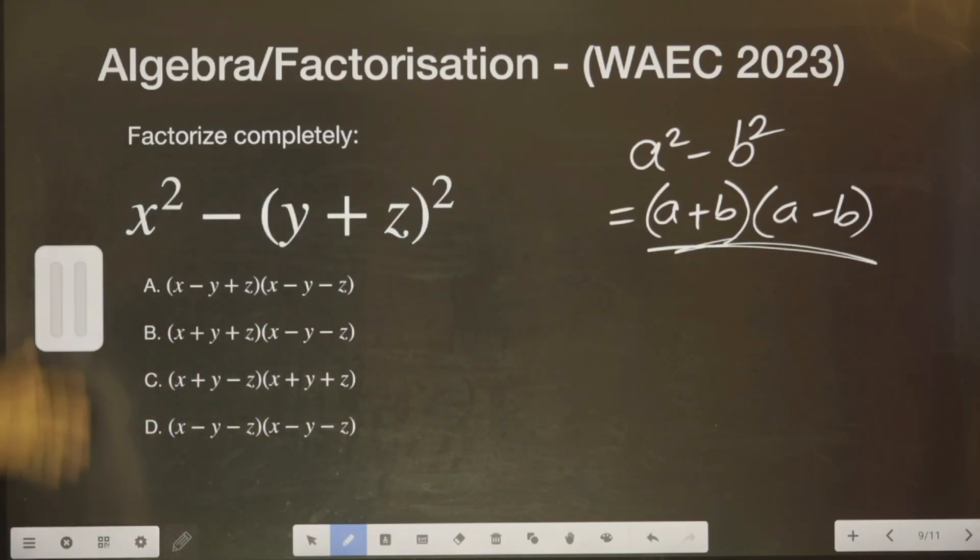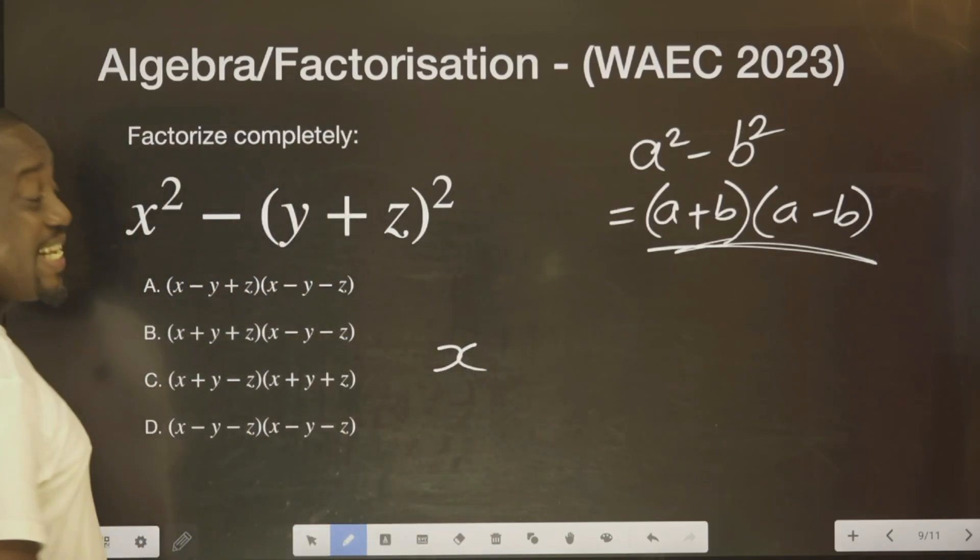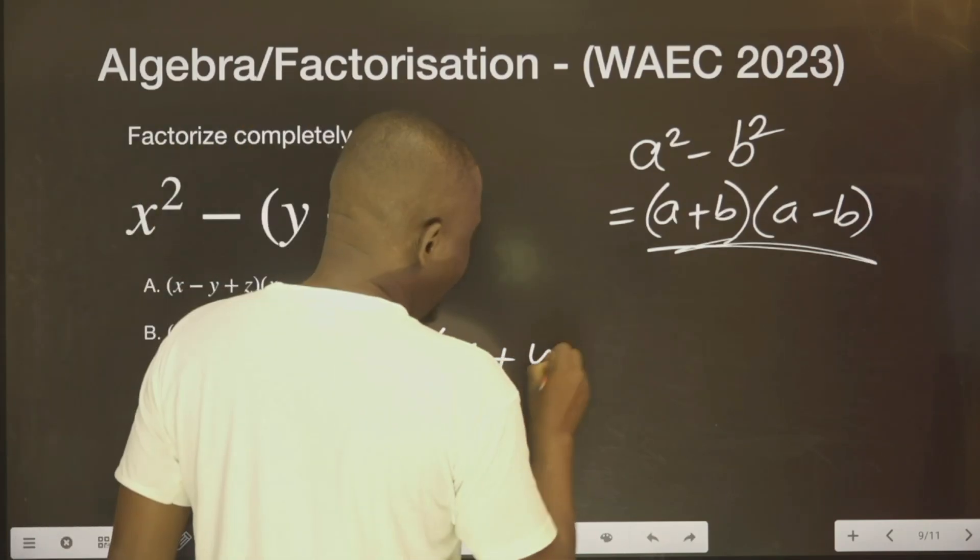So it means therefore, you can do this as X, which is representing A, plus this Y plus Z.